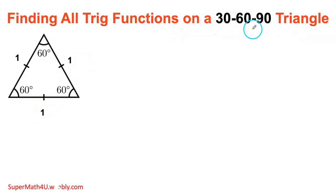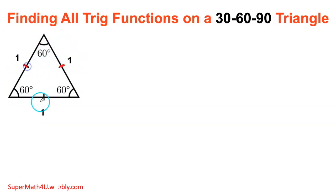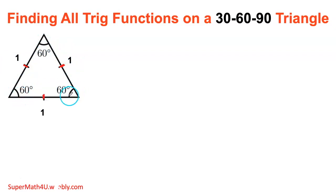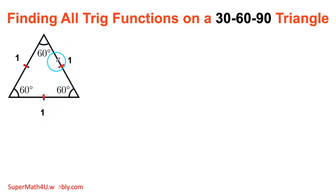So how do we get to this triangle? I'm going to start with an equilateral triangle. An equilateral triangle means a triangle where all sides are equal. If the triangle is equilateral, then it's equiangular as well, so the angles are equal. If the angles are equal and the sides are equal, then this is a regular triangle.